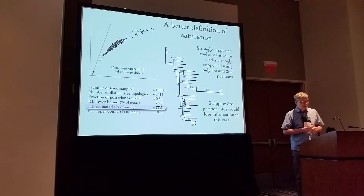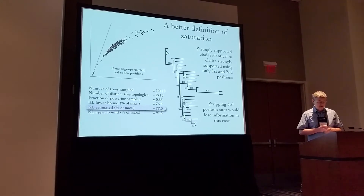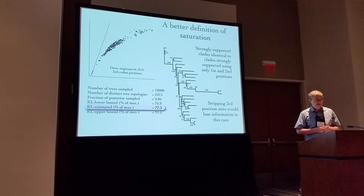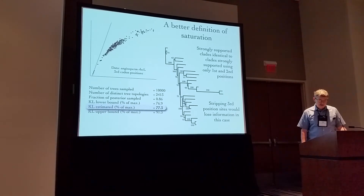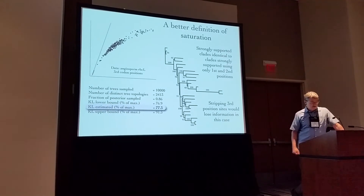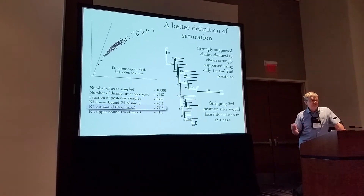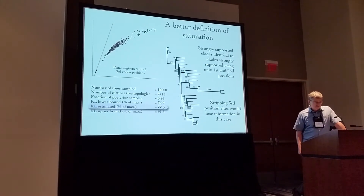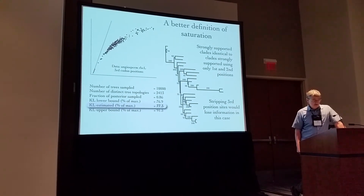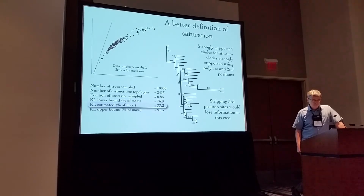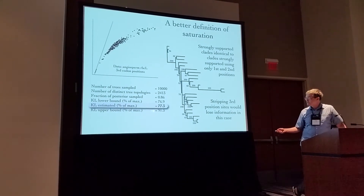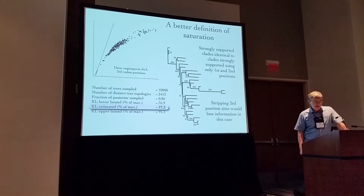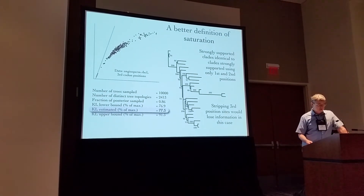KL provides an objective measure of saturation, where saturation means a site has undergone so many substitutions that there is no longer any information about history. In this example, the standard saturation plot of raw pairwise dissimilarity against corrected pairwise distance would clearly suggest saturation for third-position sites, and many would be tempted to discard them. However, using only these sites yields a tree that doesn't conflict with and provides strong support for many groups supported by first- and second-position site analyses. KL indicates that third-position sites have 77% of the maximum possible topological information, and are thus very far from being saturated — stripping them would throw away perfectly good information.